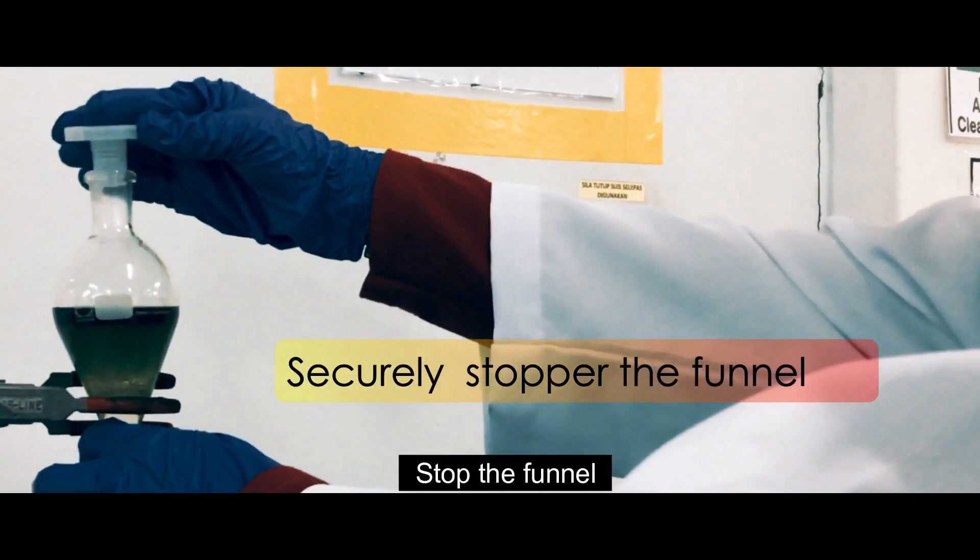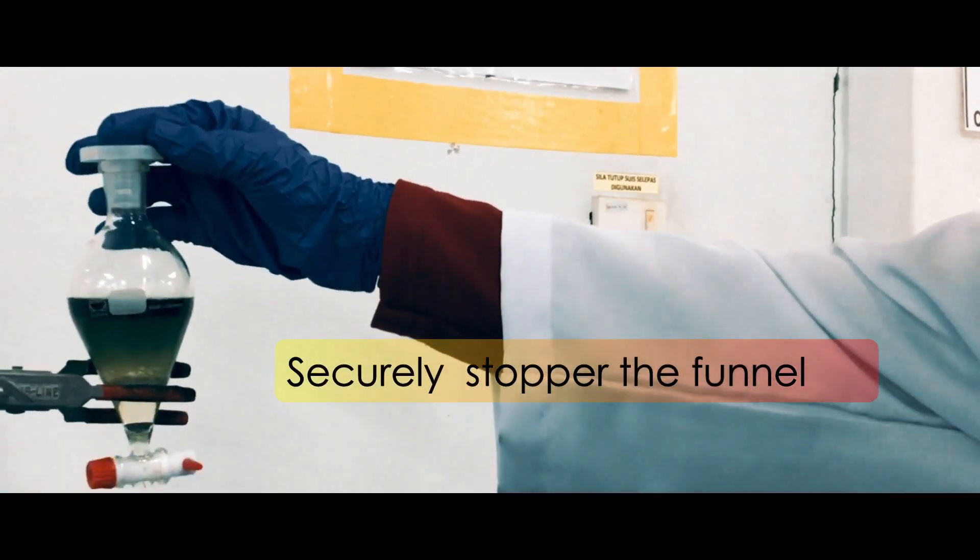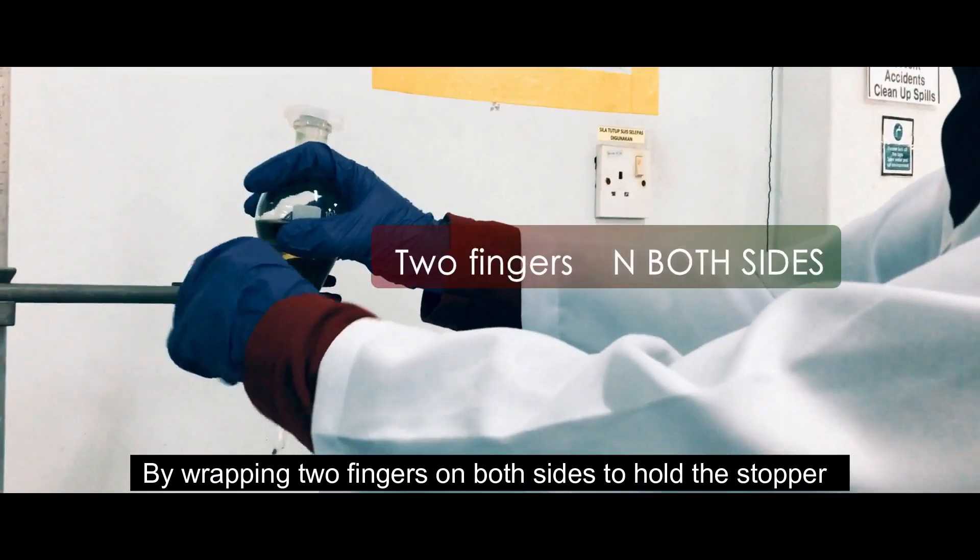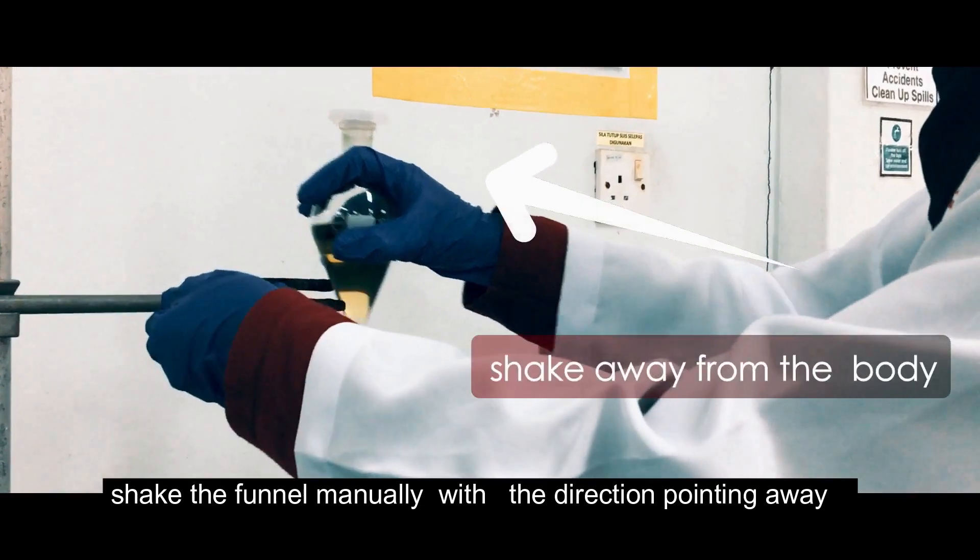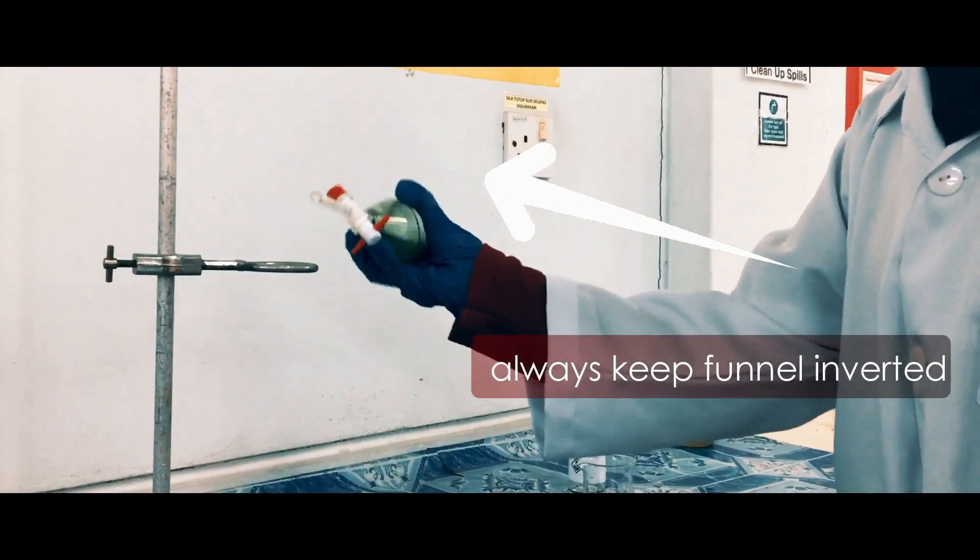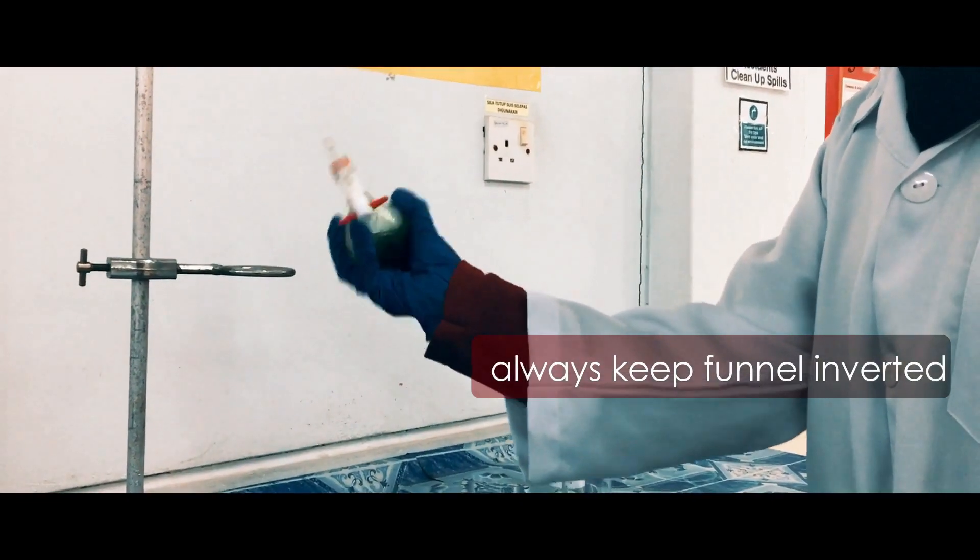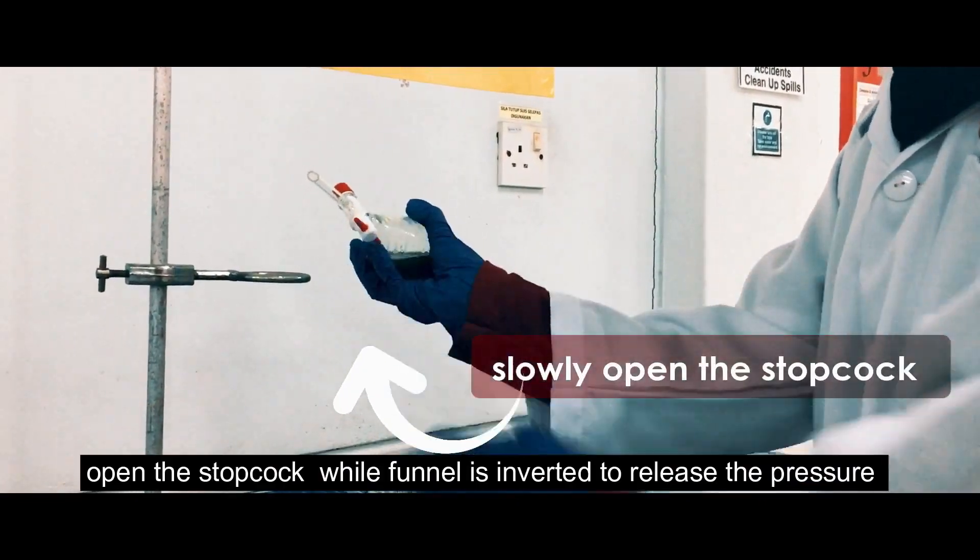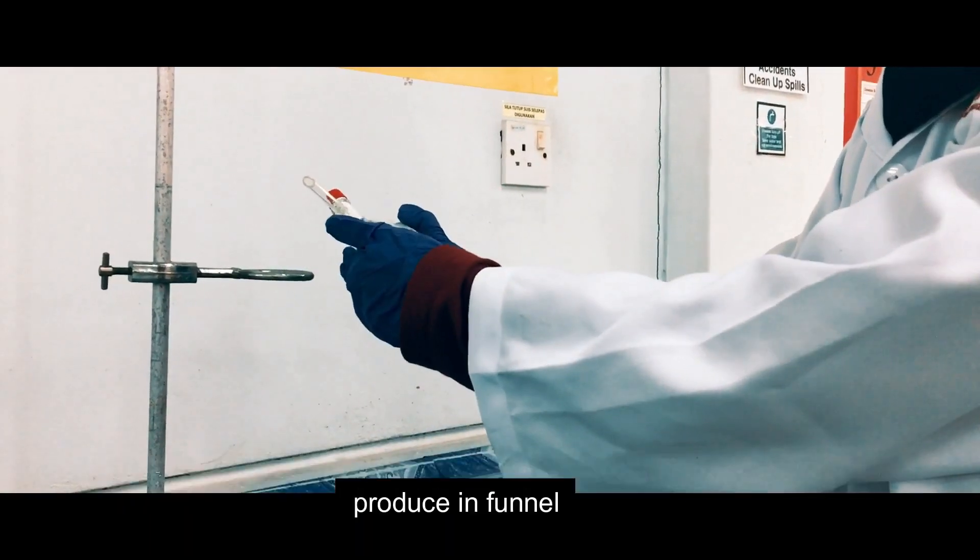Stop the funnel. By placing finger on both sides, hold the stopper. Shake the funnel manually with the direction pointing away from your body and your lab partner. Open the stopcock while funnel is inverted to release the pressure produced in funnel.